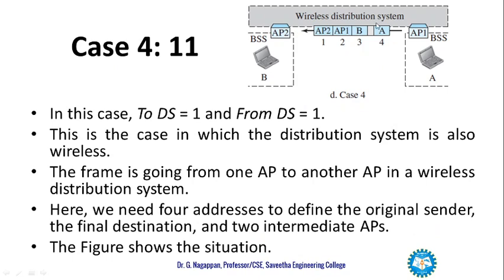In case 4, both ToDS and FromDS are 1. Here a frame moves from one access point to another in a wireless distribution system. Since the distribution system is also wireless, we need all four addresses. Station A is the original source, B is the original destination, and the frame is currently moving from access point 1 to access point 2. These are the four types of address fields depending upon the ToDS and FromDS fields.